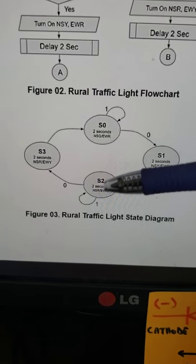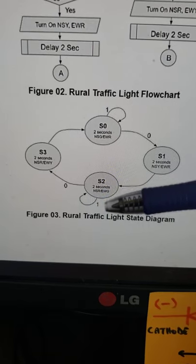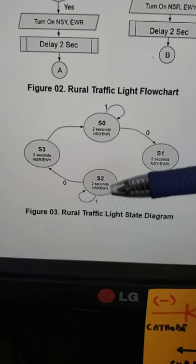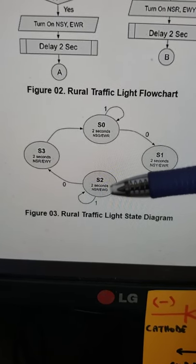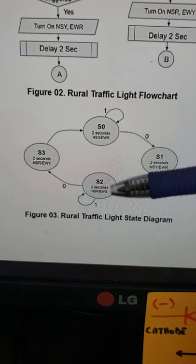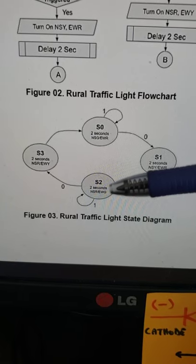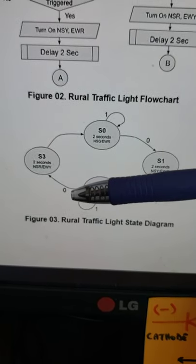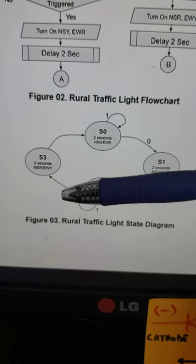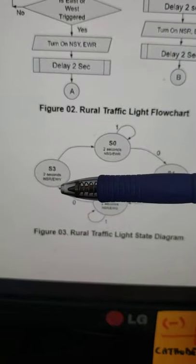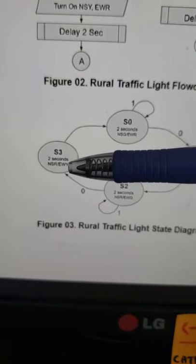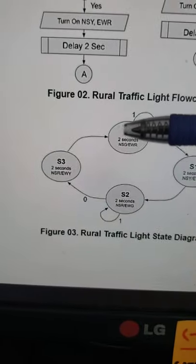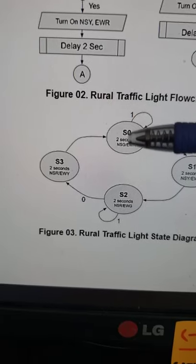It continues to receive a logic one from the pull-up resistor, and then if the north-south switch is depressed, it will receive a zero input since it's signaled to ground, transitioning to north-south red, east-west yellow, and then back to the original state.